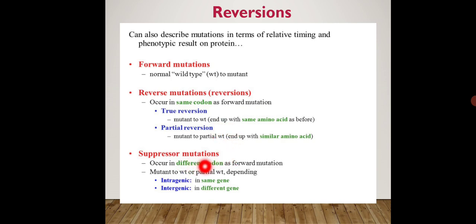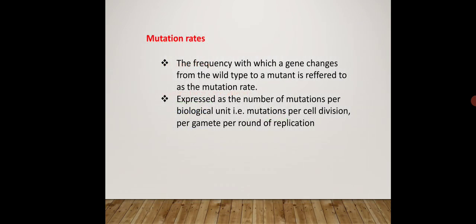Next is suppressor mutation, which suppresses the effect of one mutation by another mutation. It consists of two types: intragenic, where both mutations occur in the same gene, and intergenic, where the mutations occur in different genes. That is all about reversion and intercalating agents.